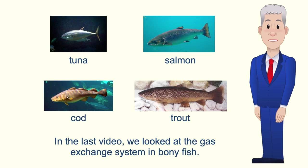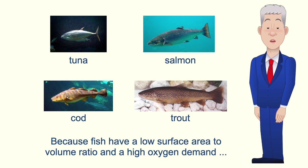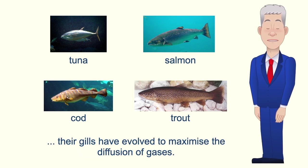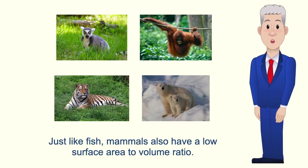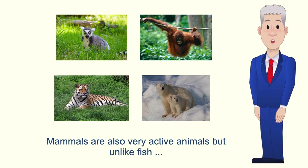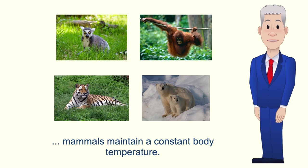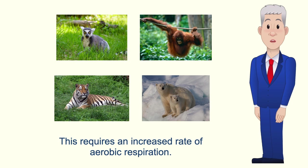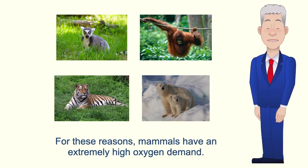In the last video we looked at the gas exchange system in bony fish. Because fish have a low surface area to volume ratio and a high oxygen demand, their gills have evolved to maximize the diffusion of gases. Just like fish, mammals also have a low surface area to volume ratio. Mammals are also very active animals, but unlike fish, mammals maintain a constant body temperature, which requires an increased rate of aerobic respiration. So for these reasons, mammals have an extremely high oxygen demand.